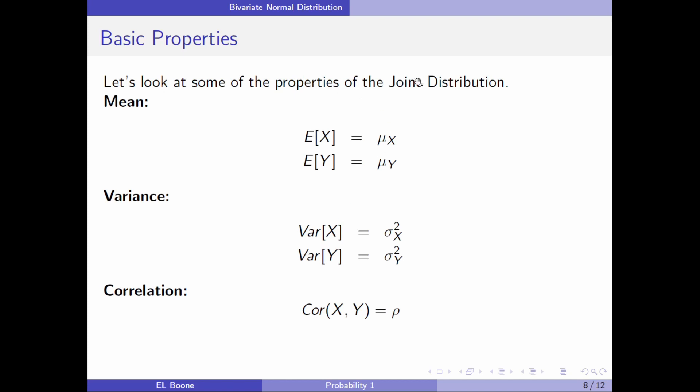Let's look at some properties. The expected value of x is μ_x, the expected value of y is μ_y, the variance of x is σ²_x, the variance of y is σ²_y, and the correlation between x and y is given by ρ. I'm writing it down using expectation and variance notation so you're aware this is the actual thing we're talking about.